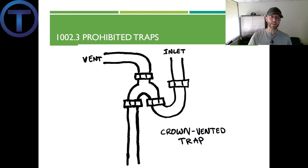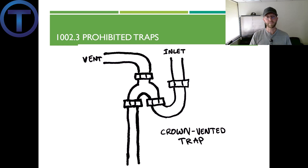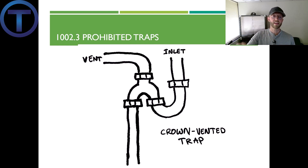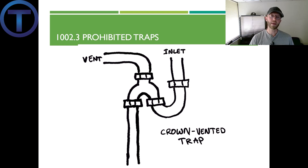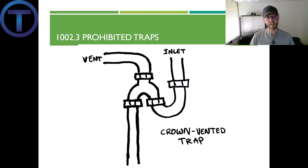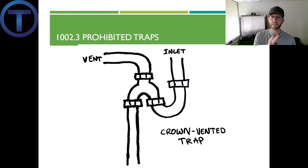Prohibited trap number three: traps that are crown vented. You can see the trap here with a vent coming off — it's called a crown vent because it comes off the top of the pipe right after the trap. The problem is that as fluid moves through the trap it gains upward momentum and can actually go in and clog the vent, making the vent obsolete. Crown venting is discussed in Chapter 9 — you can have a crown vent but it has to be downstream by two pipe diameters. But crown vents like this one are out.